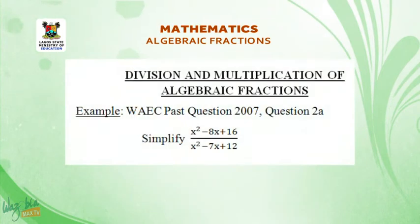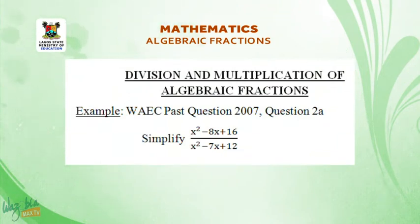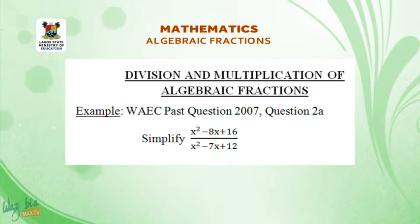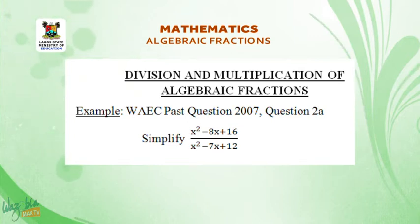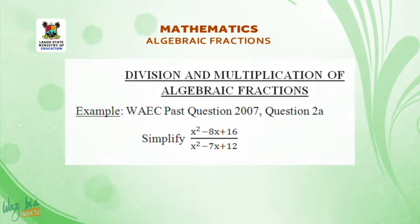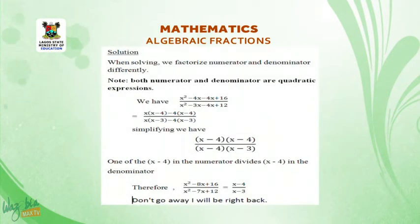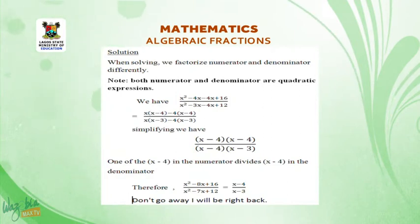Division and multiplication of algebraic fractions. Example: WAEC past question 2007, question 2a — Simplify x squared minus 8x plus 16, all over x squared minus 7x plus 12. Solution: When solving, we factorize the numerator and denominator separately. Note that both are quadratic expressions.